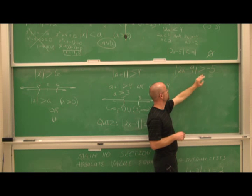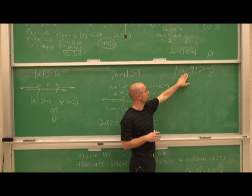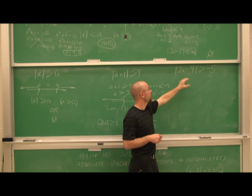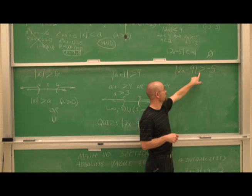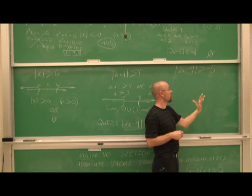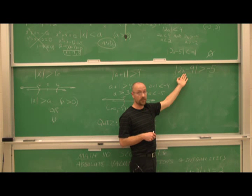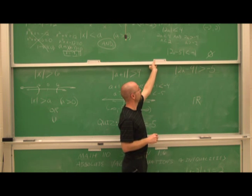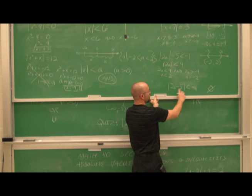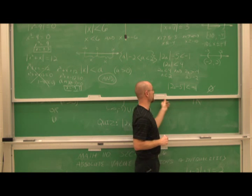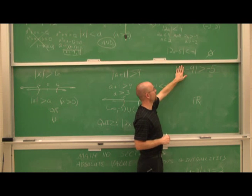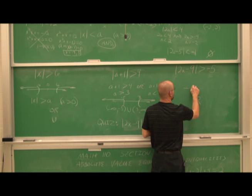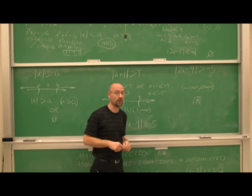We have the absolute value of some quantity greater than negative 5. Let's assess it — it's already isolated. What do we know about absolute values? They're always positive. And positive values are always greater than negative values. So whatever I put in here will always be greater than negative 5. That means the solution is all real numbers — the entire number line. In interval notation: negative infinity to positive infinity.